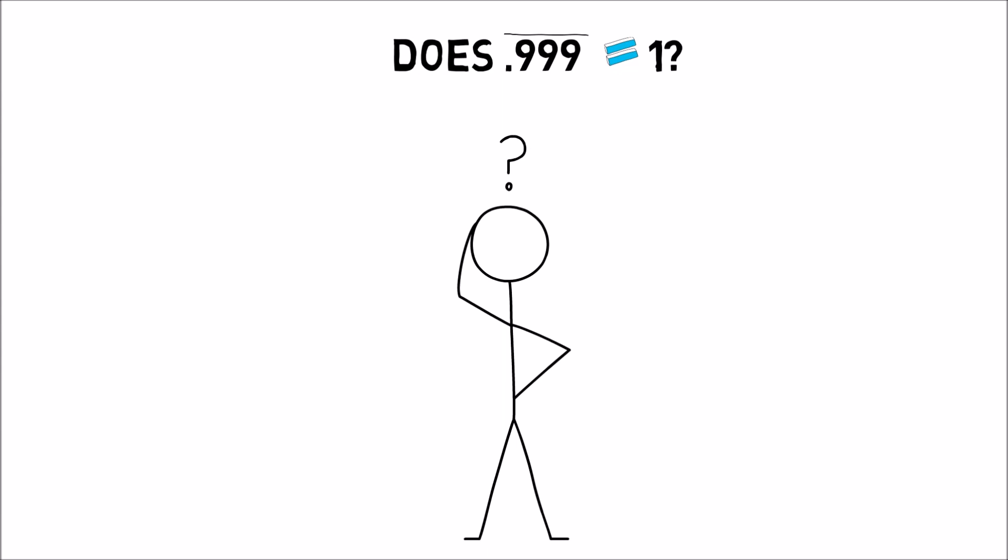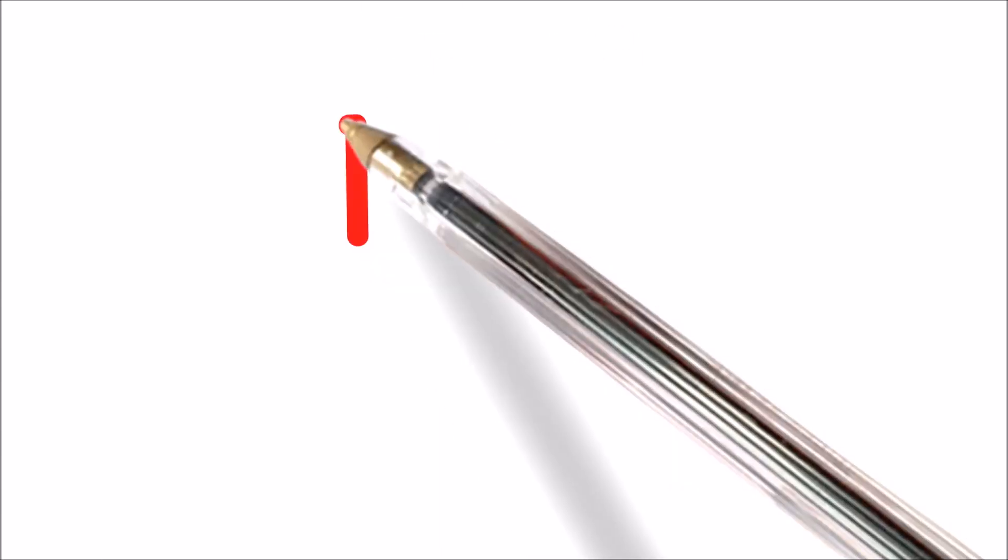It would seem like they cannot equal each other. How can a number that has only 9's in it equal a number that has not even a single 9 in it? Let's take a look at the math.